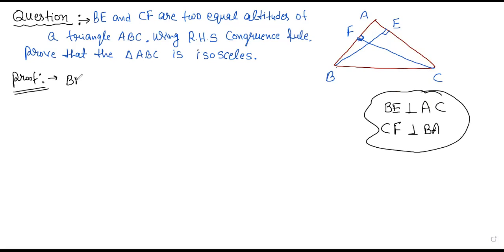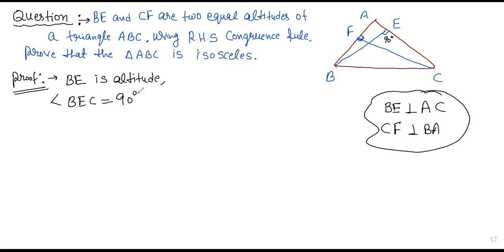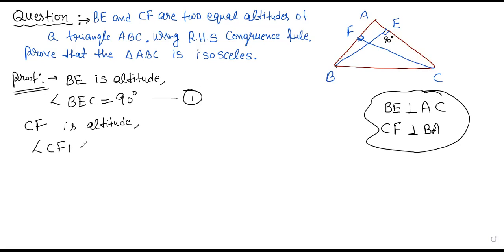BE is altitude, so altitude means BE creates a 90-degree angle. So angle BEC is equal to 90 degrees — this is equation number one. Similarly, CF is altitude, so angle CFB is also 90 degrees — equation number two.